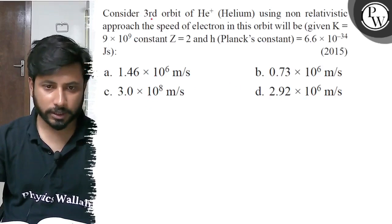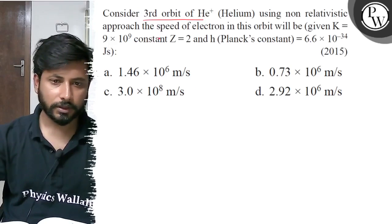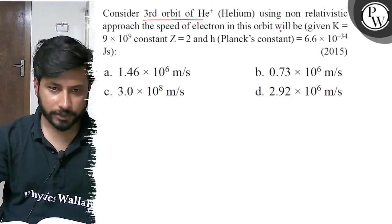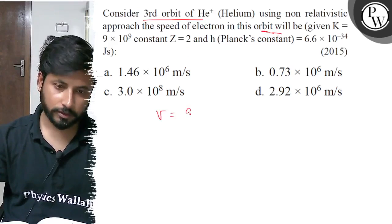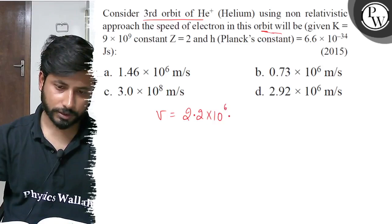So we have the third orbit of helium. What is the speed of electron? The speed of electron formula is 2.2 × 10^6 × Z / n.